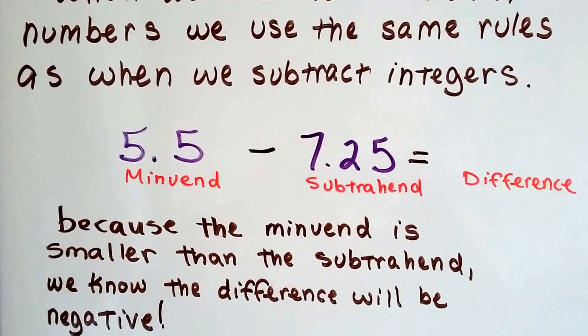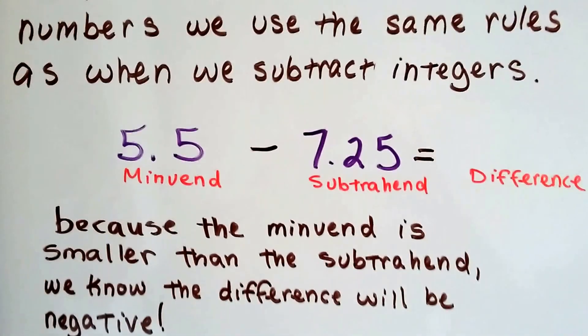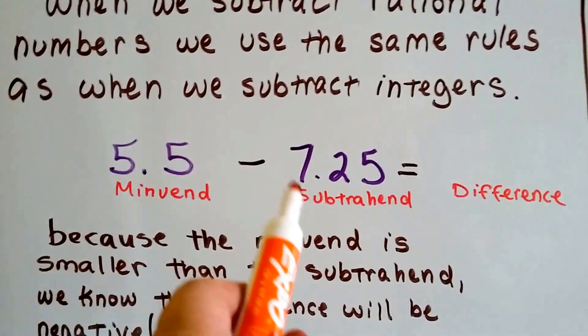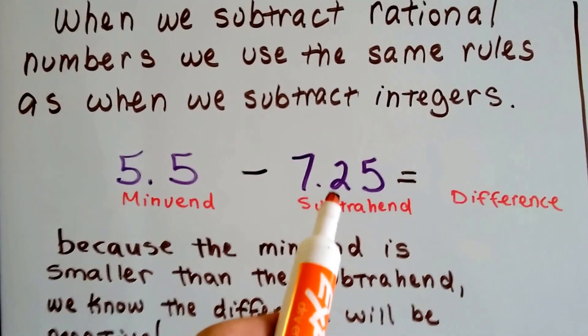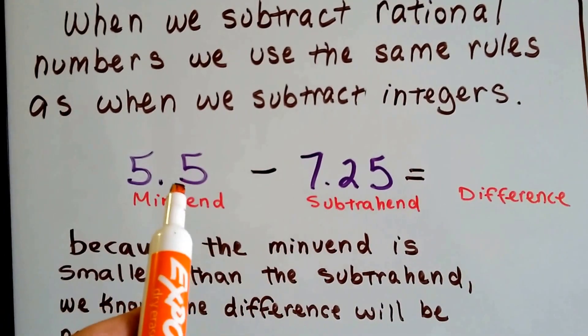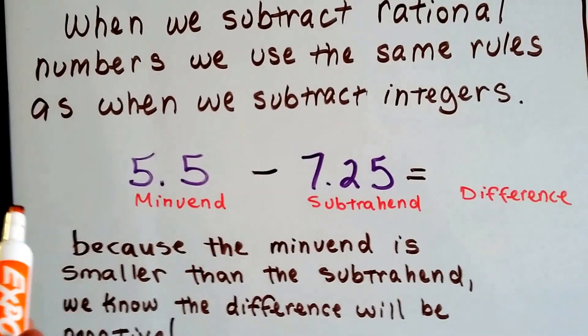Because the minuend in this equation is smaller than the subtrahend, we know the difference will be negative. We have 5.5 take away 7.25, and this is way bigger than that one. So if we do the subtraction, it's going to push us into the negative. We'll use all of the 5.5 and then some.